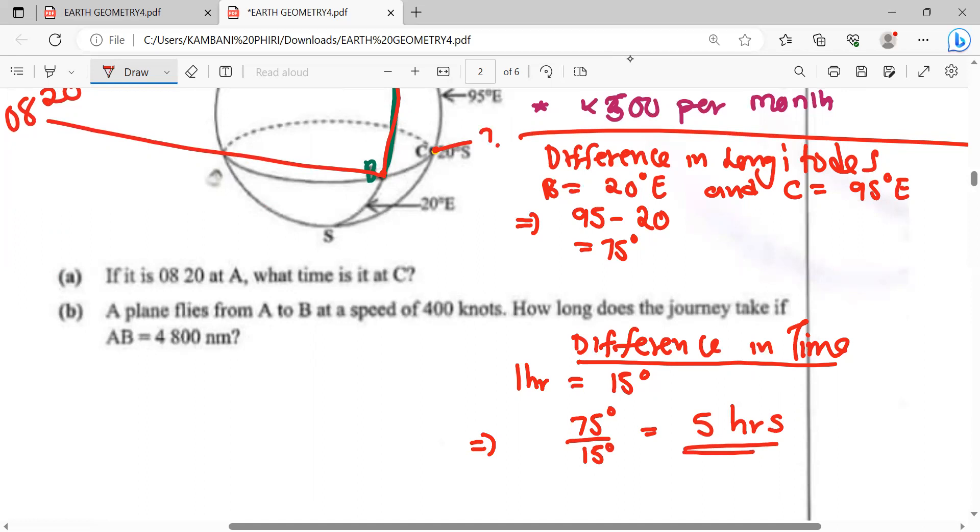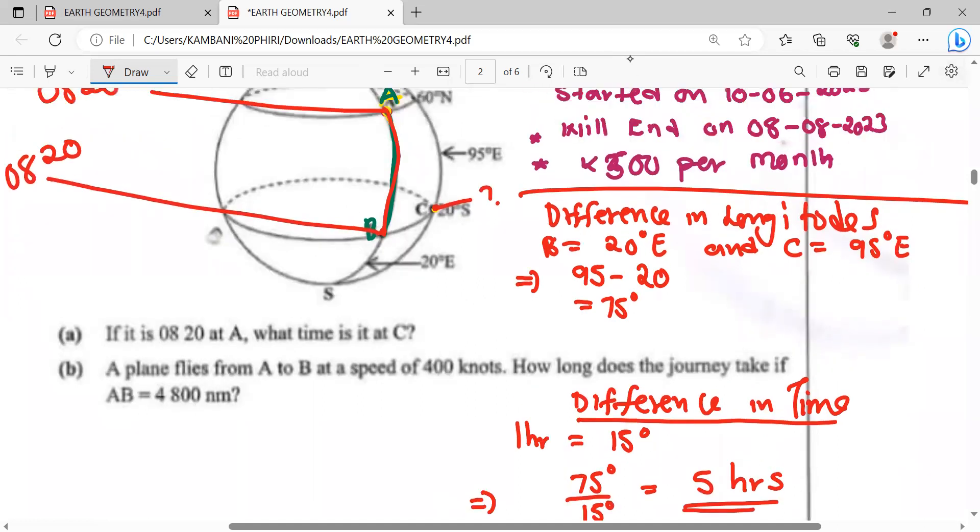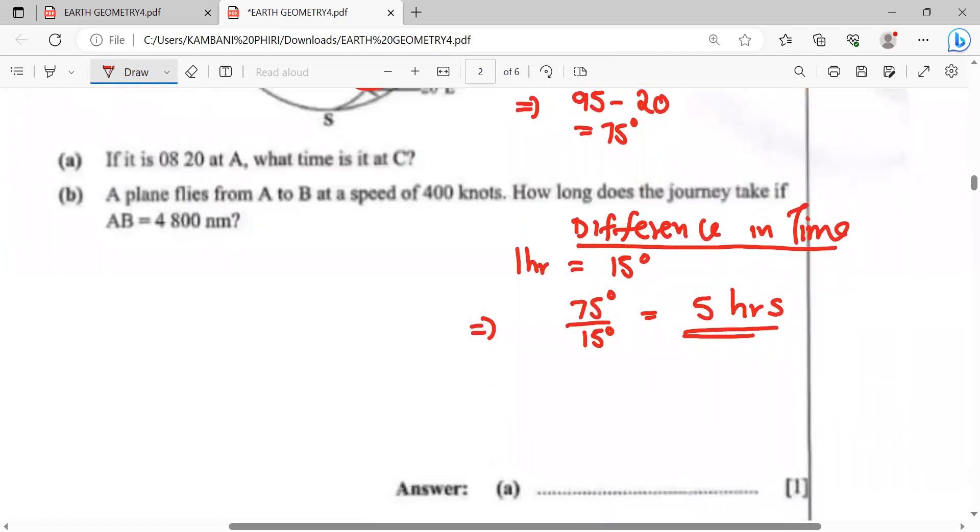In terms of time, there is a difference of 5 hours. At this point the time is 0820. What is the time at C? C is on the right-hand side of B, so we add time. Time at C equals 0820 hours plus 0500 hours, which gives us 1320 hours. Take note we don't write it as a ratio.